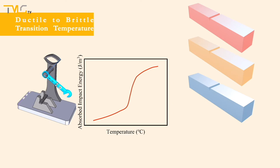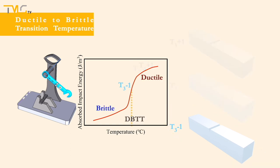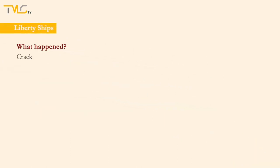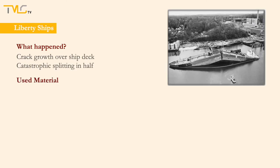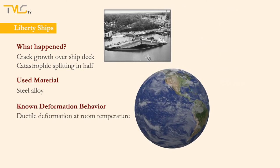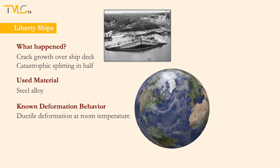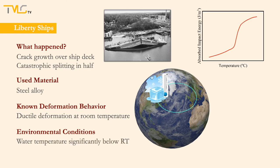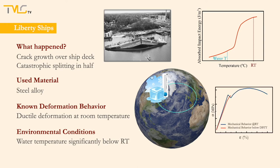The discovery of the ductile-to-brittle transition temperature coincided with World War II, as the Liberty ships started to experience structural damage due to rapid crack growth over the back of the ships, with a few of them catastrophically splitting in half. Although the alloy used in the Liberty ships was ductile at room temperature, they were operating in the northern Atlantic Ocean region where water temperatures are quite lower than room temperature. The lower temperatures caused the alloys to undergo ductile-to-brittle transition, promoting brittle characteristics and leading to the catastrophic failure of some ships due to brittle fracturing rather than plastic deformation.